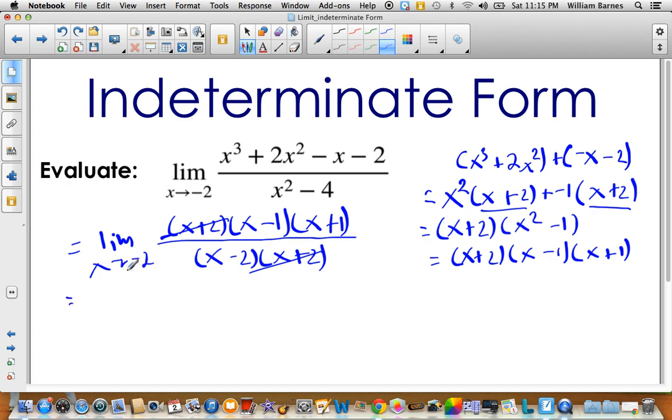And then we're just going to sub in what we have left. So I have an x minus 1 and an x plus 1, so that's going to be negative 2 minus 1. So that ends up being negative 3 times negative 1 all over negative 4. So we end up with negative 3 over 4. And there's our limit.